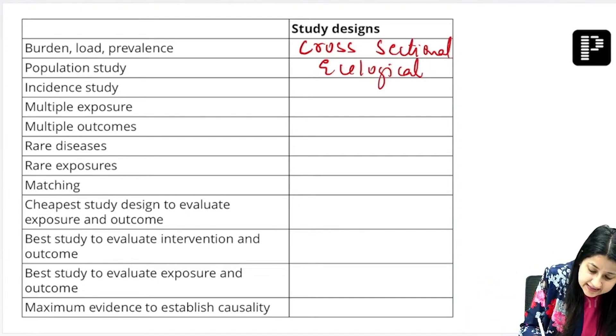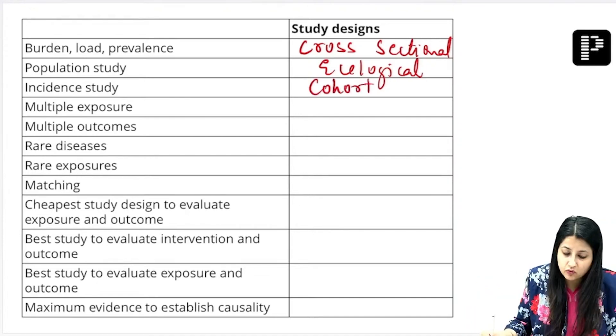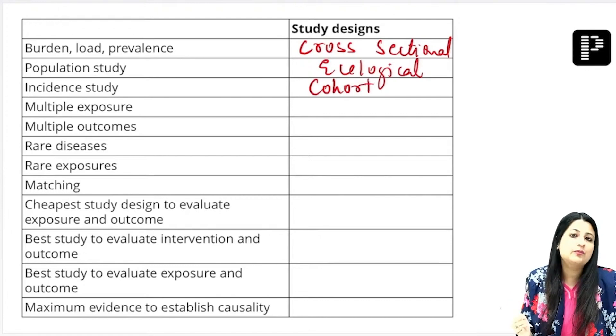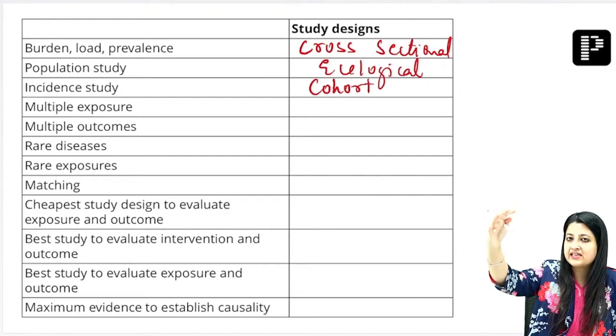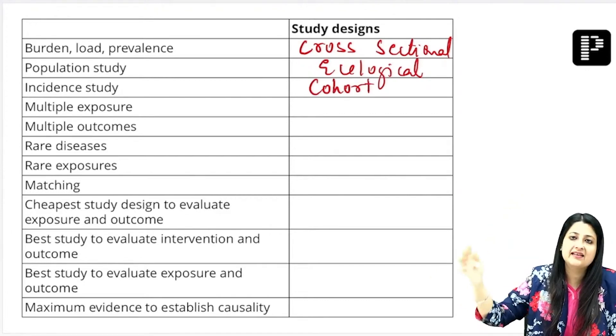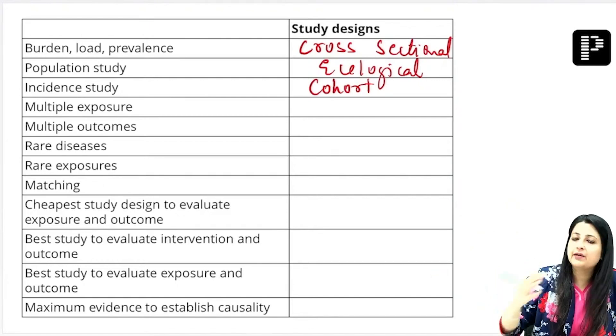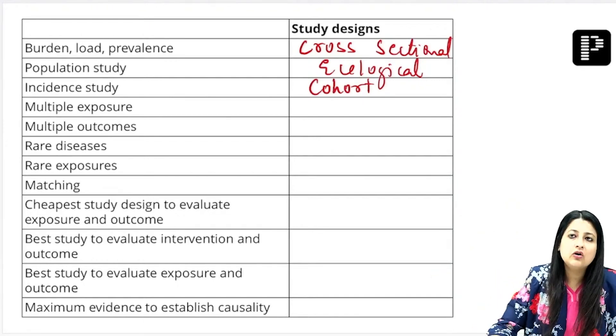Incidence study means which study? Cohort, very good. Incidence is cohort study. Multiple exposures: you start with breast cancer cases, not having breast cancer, go back and ask about whether you took alcohol, whether you used OCPs, whether you drank, whether you smoked.